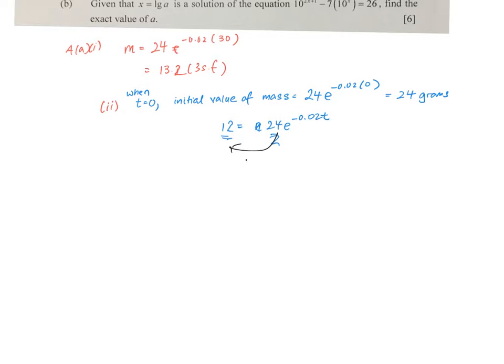Alright, we bring the 24 over, we have 12 over 24, which is equal to half, and this is equal to e to the power of negative 0.02t. So you know, if I want to get rid of ln, I use e. If I want to get rid of e, I use ln. So rewriting the equation, a simple technique would just be to ln both sides.